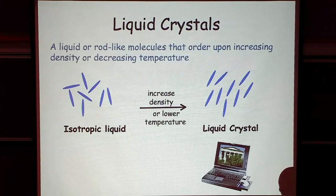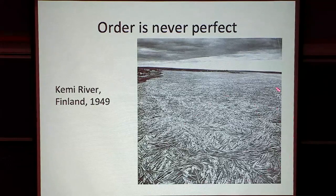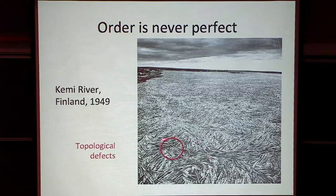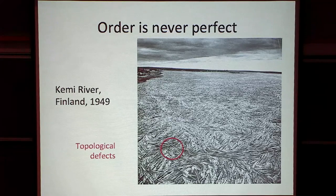However, the order of these molecules is never perfect. This is an image from a 1949 issue of Life magazine showing the result of a lumber workers' strike in Finland — logs going down the Kemi River in northern Finland. There is a lot of local alignment and order, but also many topological defects: regions where things are not aligned. These defects have a very well-defined geometry that we can understand and describe. You can see regions coming together almost like a triangle of three aligned regions.